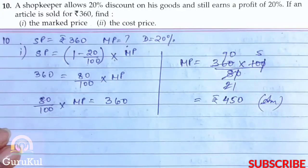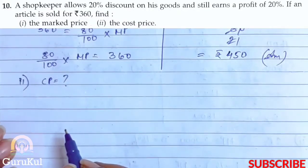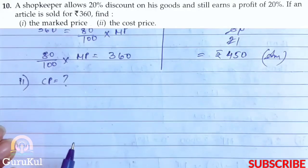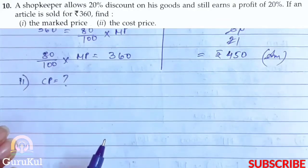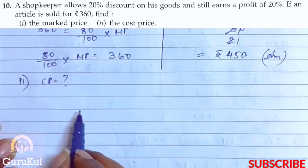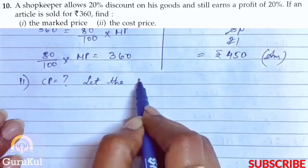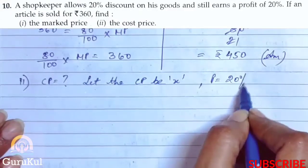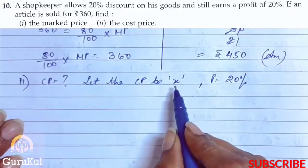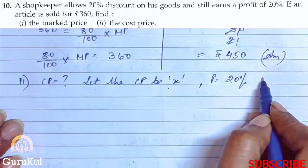Now for the second part, we need to find the cost price. The shopkeeper sold the article for Rs. 360 and even after giving 20% discount, he earned a profit of 20%. So let the cost price be x. On this, the shopkeeper made a profit of 20%, and the selling price was rupees 360.